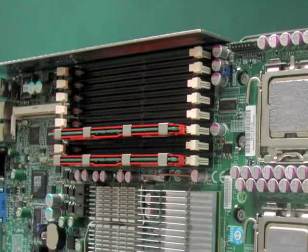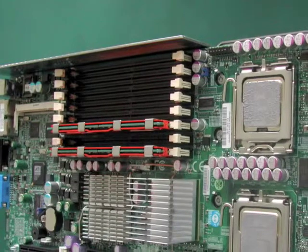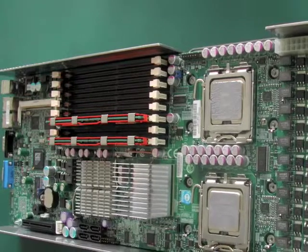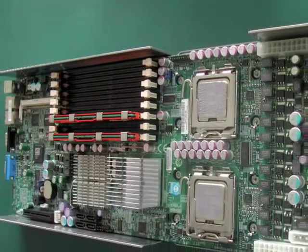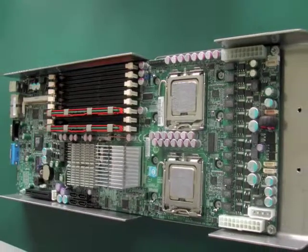Here you see the mainboard, which is a dual processor board from Supermicro. It picks up two quad-core CPUs from Intel, the type is E5320 and they are on 1.86 GHz. So the computer has eight cores in total.